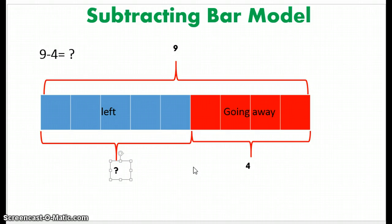Okay, so let's look at our subtracting bar model. Everything is labeled. Everything is where it should be. So we have our whole, which is 9, and then we have this part here that's going away. That's 4. Then we have this part that's left, and we don't know the answer.